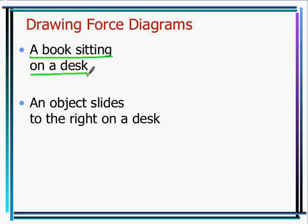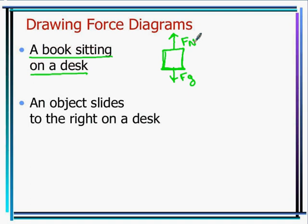Let's draw one from scratch: a book sitting on a desk. We use squares for force diagrams. Since the book isn't moving, force of gravity acts downward and force normal equals force of gravity — same size arrows. There are no forces left or right since nothing is pushing the book horizontally.